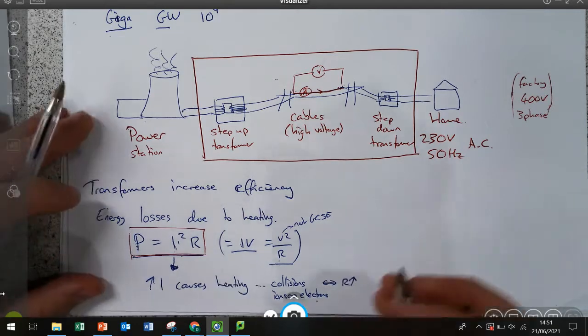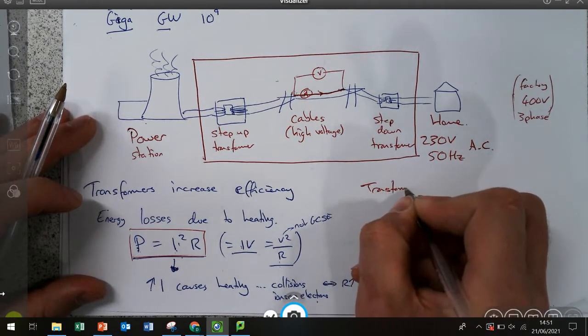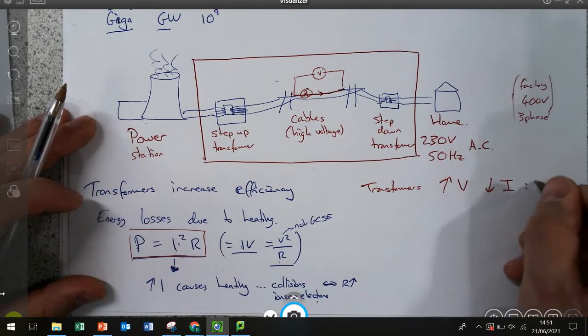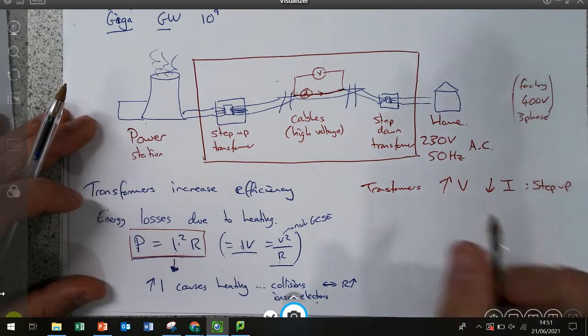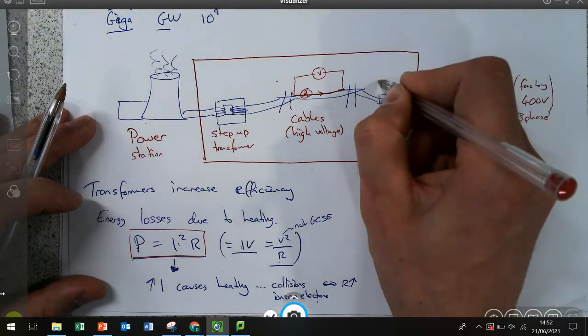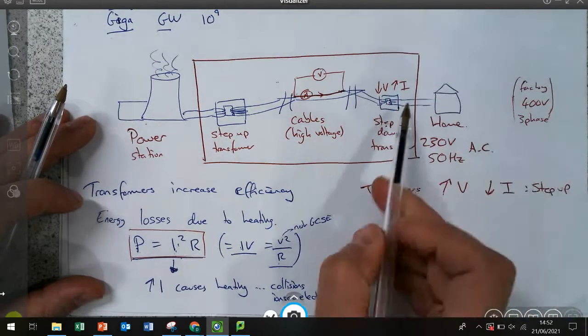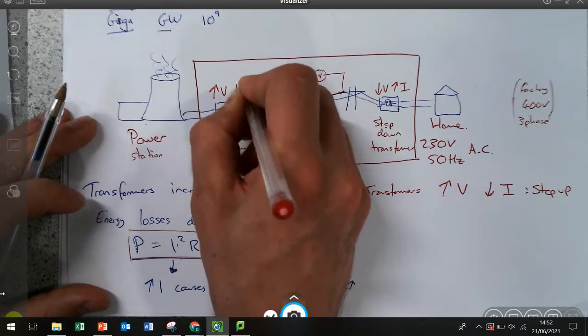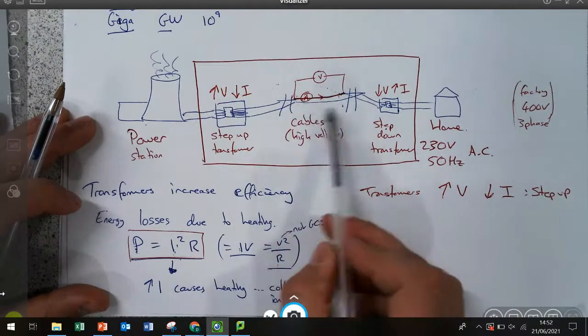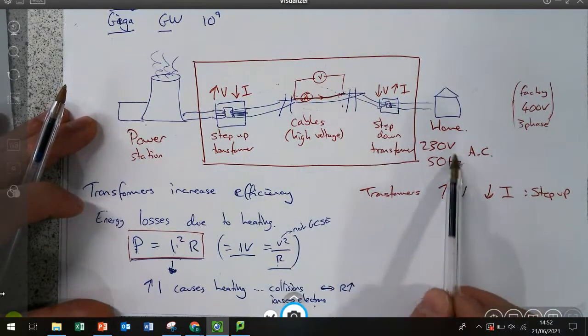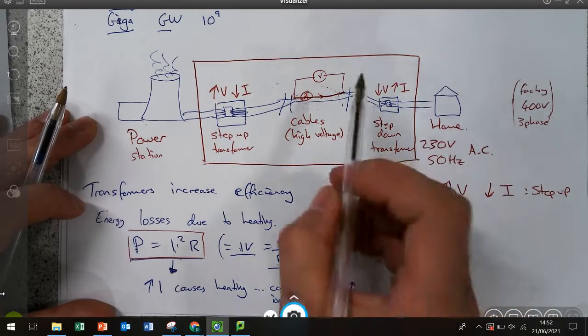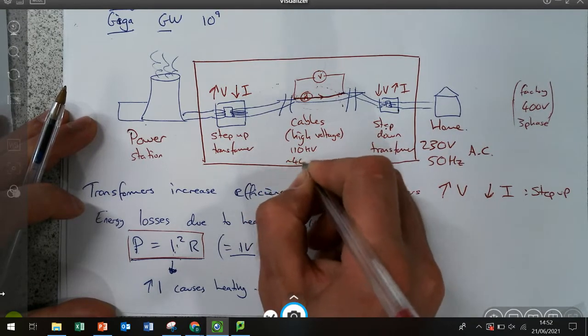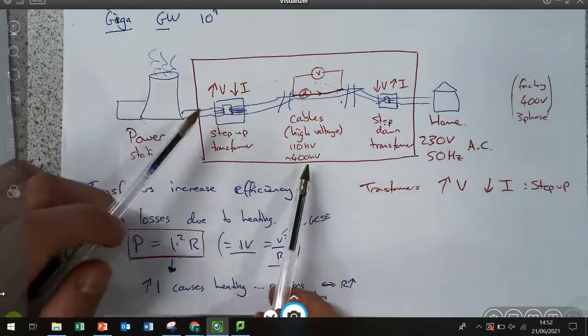So we use transformers to do that. Transformers will increase the potential difference and decrease the current if it's a step up. And if it's a step down, step down will decrease the potential difference and increase the current, basically reverse what we've done. So what we do is we increase the potential difference, decrease the current, we have less energy losses due to heating, and then we reverse our changes to get what we actually want back at the other end. So these high voltage power lines, they might be 110 kilovolts. Some of them are about 400 kilovolts. So really, we're stepping these up a huge amount.